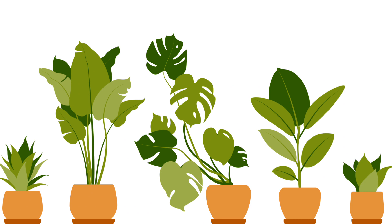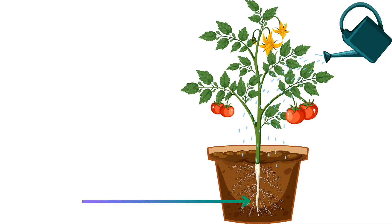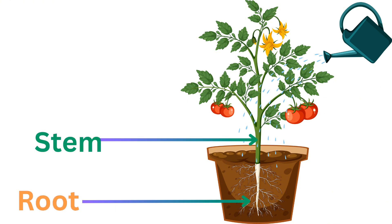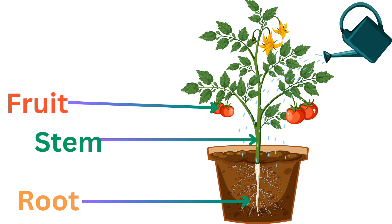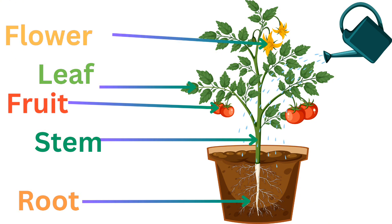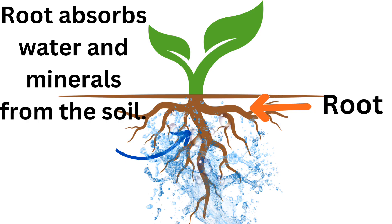Let's discuss the different parts of a plant. We can observe different parts of plants found around us: root, stem, fruit, leaf, and flower. These are some parts of a plant, and each of these different parts has its own functions.